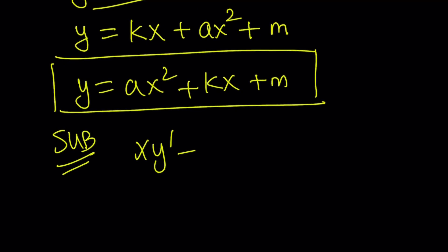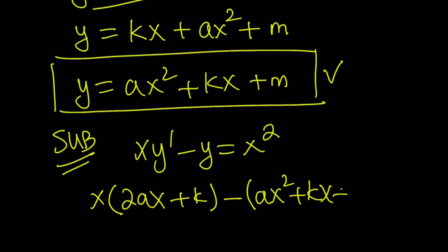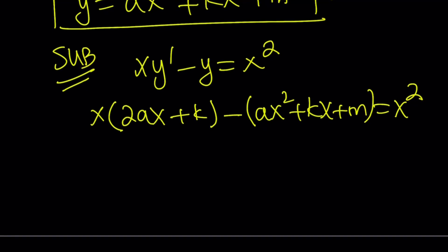Remember, we had xy prime minus y equals x squared. So x is going to be multiplied by y prime. Let's go ahead and differentiate this. This gives us 2ax plus k minus, if you subtract from this, the y itself, the difference should give you x squared. Now, let's go ahead and simplify this.